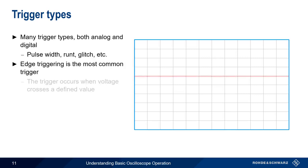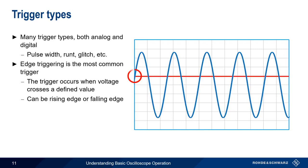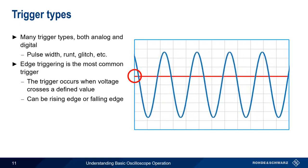In edge triggering, the user defines a voltage, and the trigger occurs when that threshold is crossed, either on the rising edge or on the falling edge of a waveform.